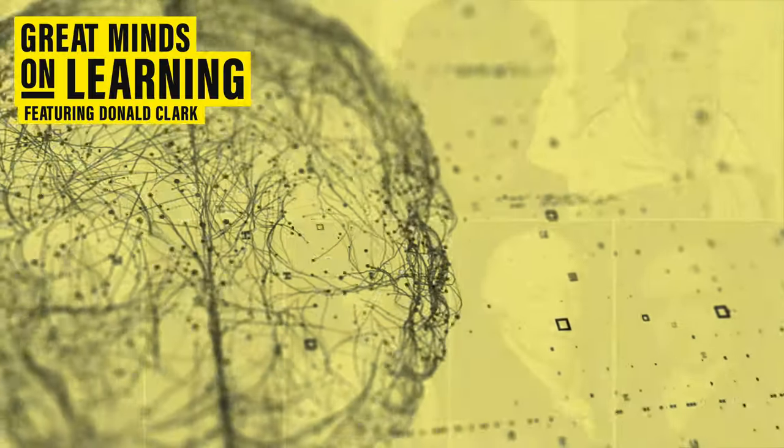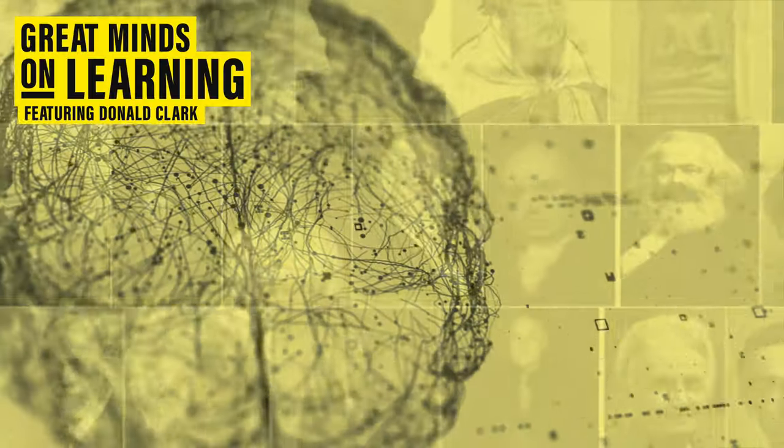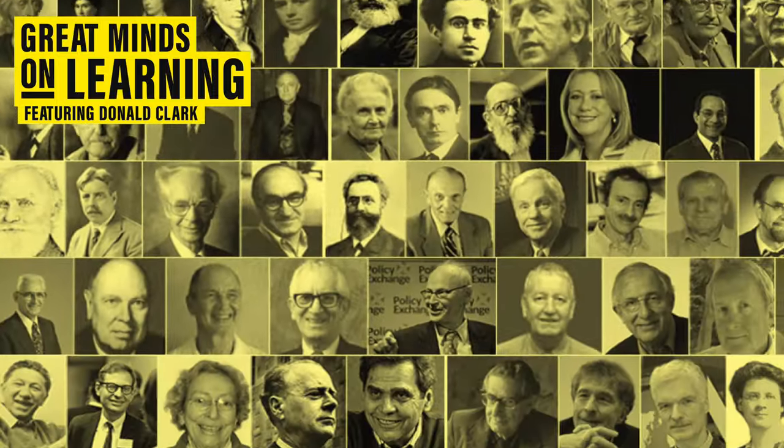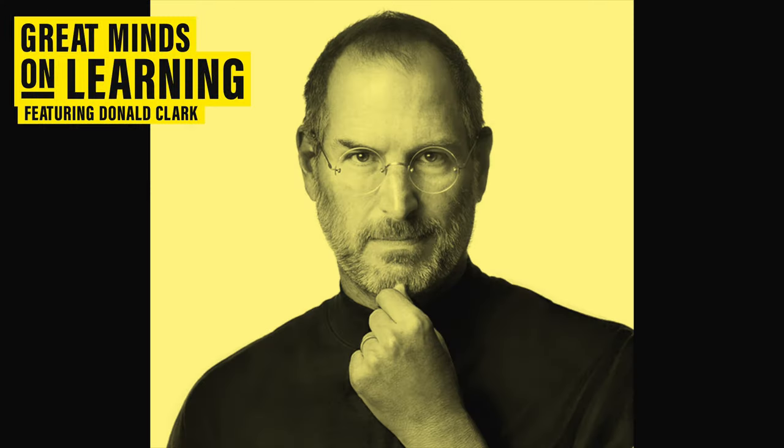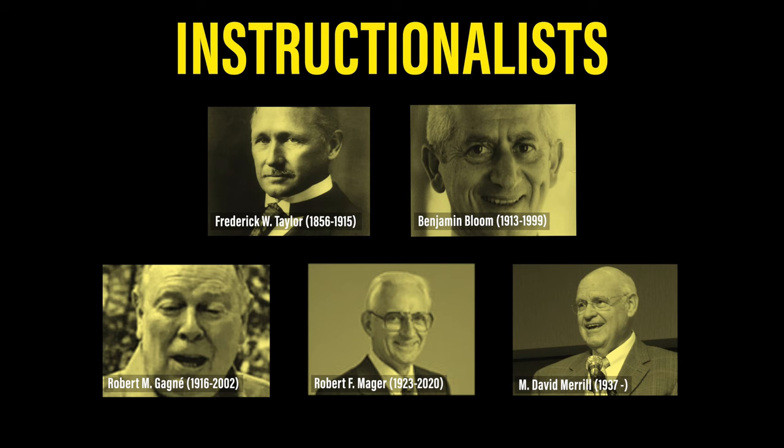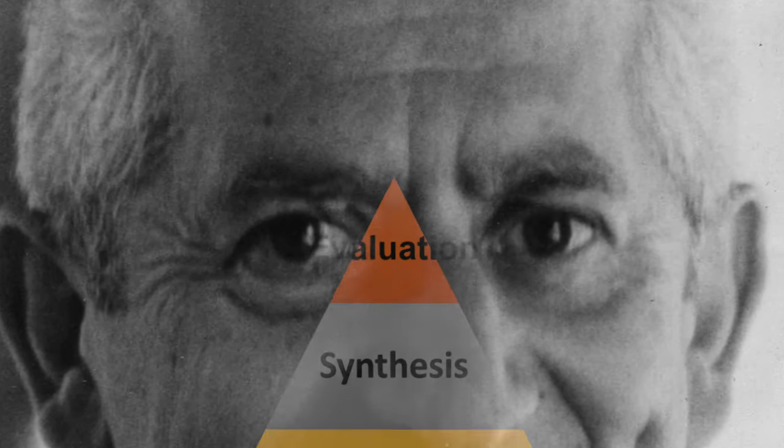In this series, Donald Clarke, the internationally famous author, blogger and entrepreneur, joins John Helmer to explore two and a half thousand years of thought and theorising about learning from the Greeks to the geeks. This episode is about the instructionalists, the theorists behind the modern practice of instructional design, and includes the strange case of Benjamin Bloom.